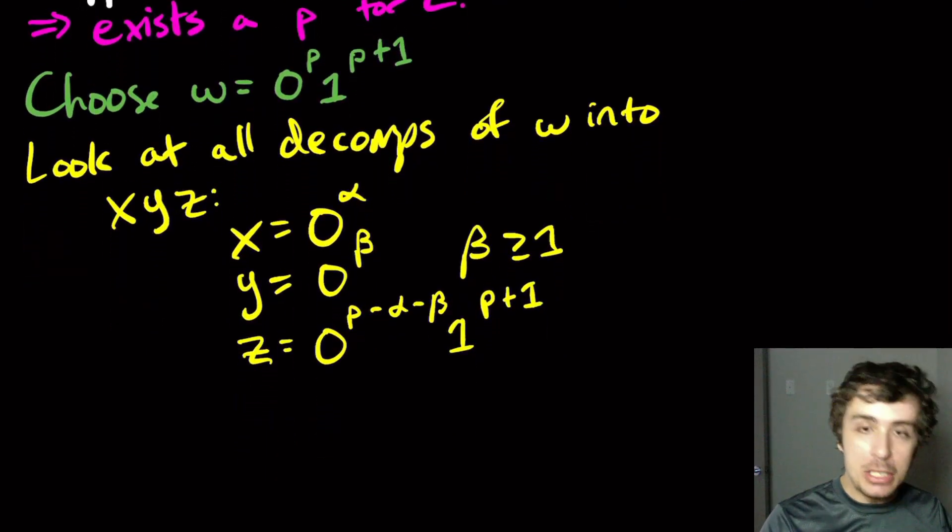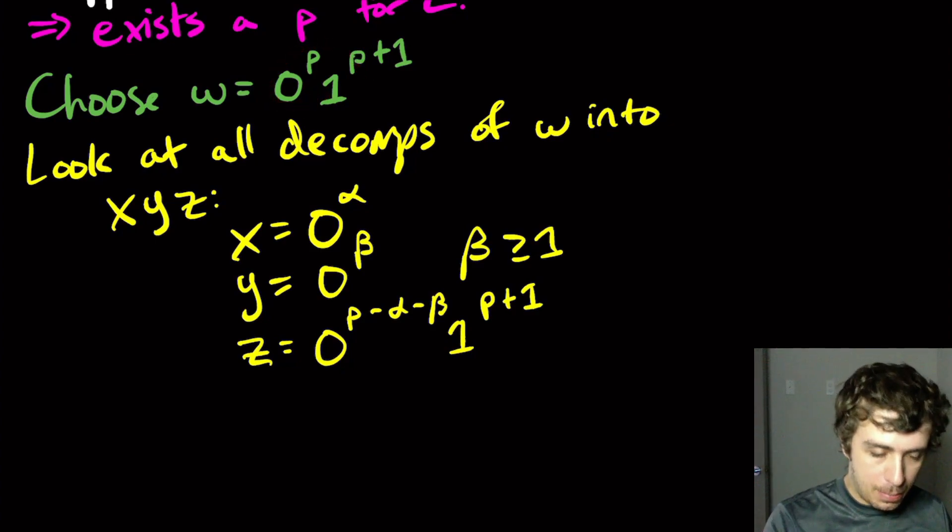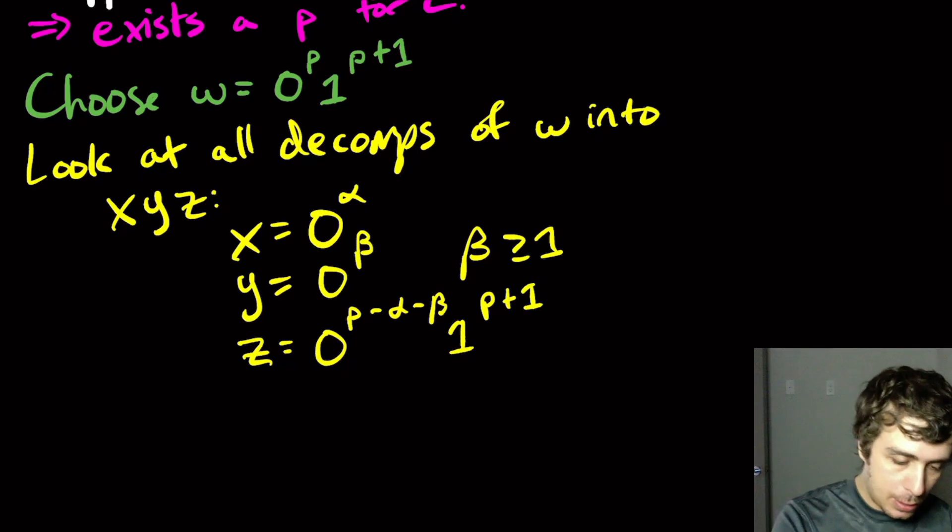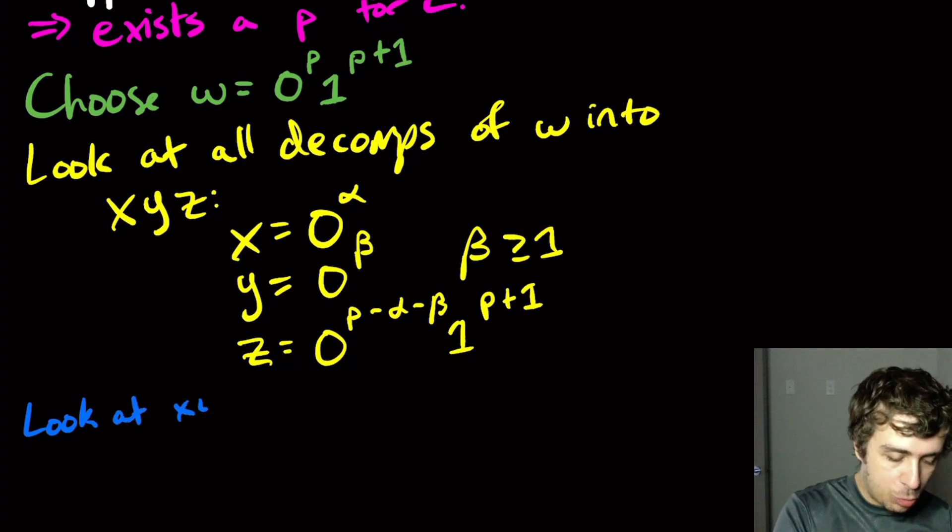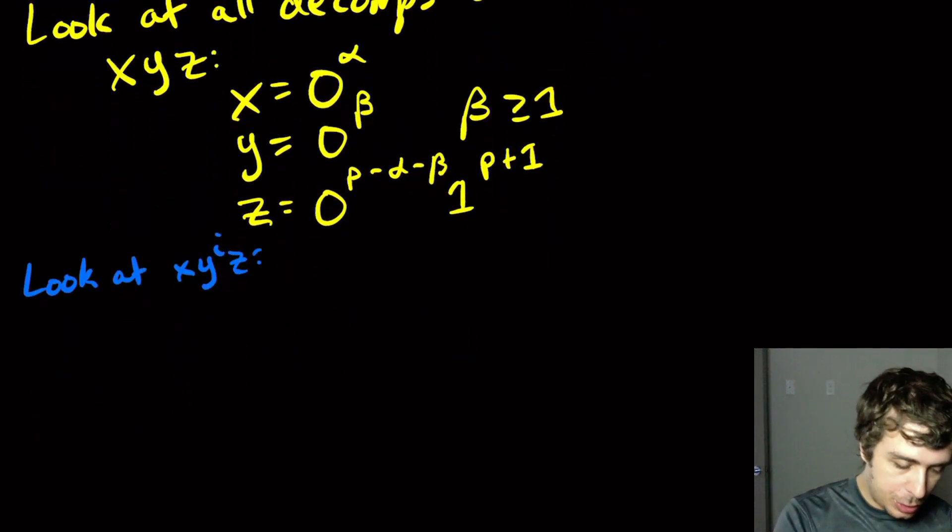Okay, so now what we need to do is we need to choose an I, or find a value of I, such that we leave the language. So let's pick an I. So let's look at X, Y to the I, Z, and see what values of I allow us to leave the language. So what is this thing? So X, Y to the I, Z.